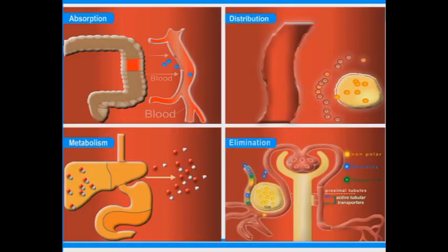Finally, the elimination process which prevents the accumulation of the drugs and their toxic metabolites. The main organ of elimination is the kidney. However, some drugs are eliminated through the bile ducts into the gastrointestinal tract or through the lungs.